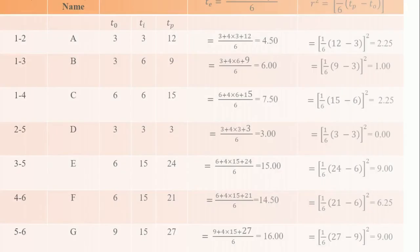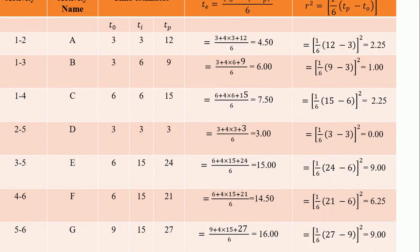Now how do we do the computation for each of this activity? We apply the formula: T equals T naught plus four TI plus TP divided by six. So you substitute for the first activity A, T naught is 3 plus 4 times TI which is 3 plus TP which is 12, divided by 6. For the variance, one over six open the brackets 12 minus 3 close the brackets squared. So 12 minus 3 will give us 9. 9 minus 6 in your calculator, what will it give you? 1.5, and 1.5 squared will give 2.25.